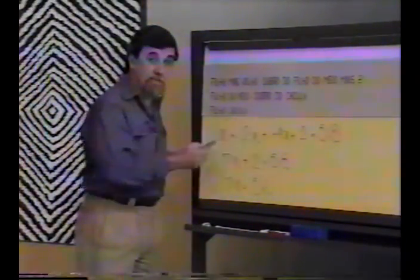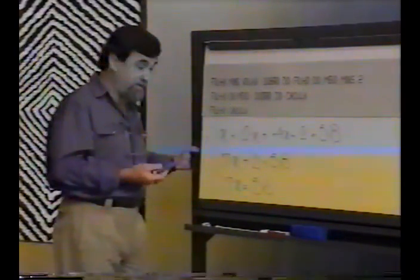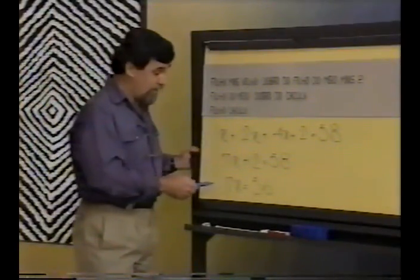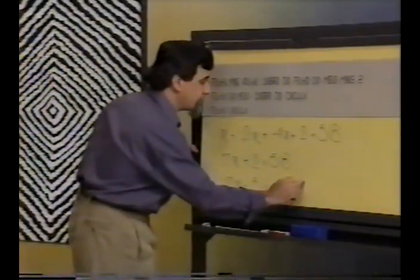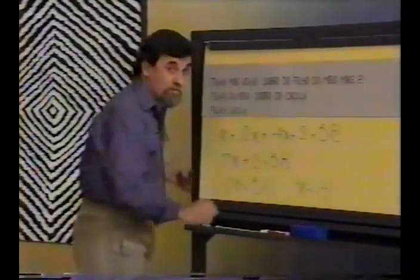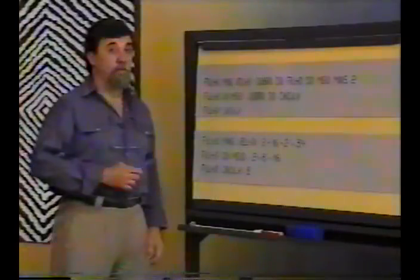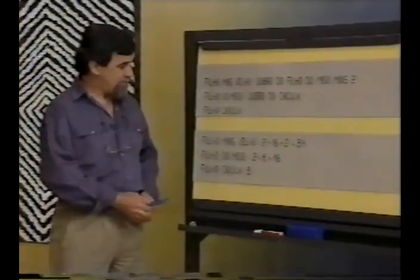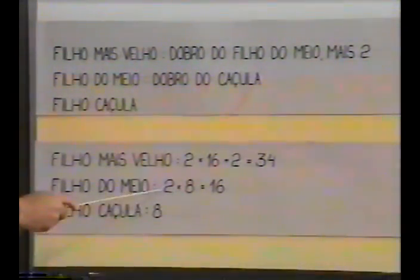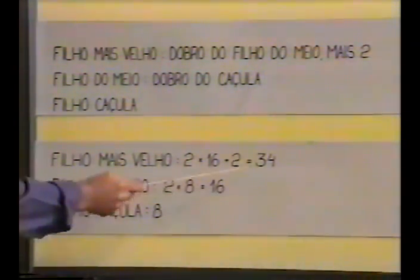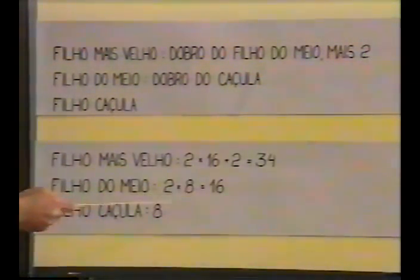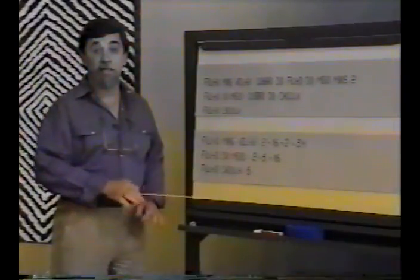De fato, 56 mais 2 dá 58. Novamente a ideia de operação inversa: se esse número multiplicado por 7 dá 56, é porque esse número é 56 dividido por 7. E 56 dividido por 7 é 8. X é 8. Oito é o número de camelos que deve receber o filho caçula. Se o caçula recebe 8, o do meio recebe o dobro de 8, que é 16. E o mais velho recebe o dobro de 16 mais 2, que dá 34. Conferindo: 34 mais 16 é 50, mais 8, cinquenta e oito. Está tudo certo. Repartimos a herança.